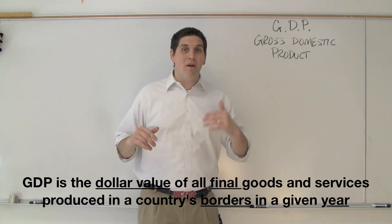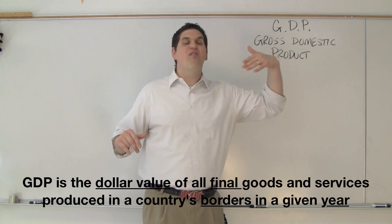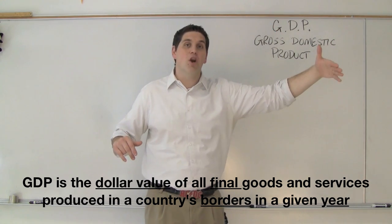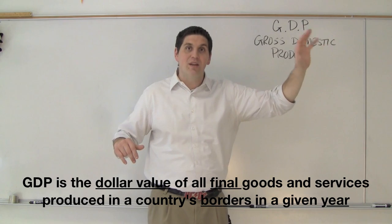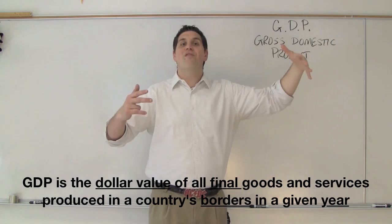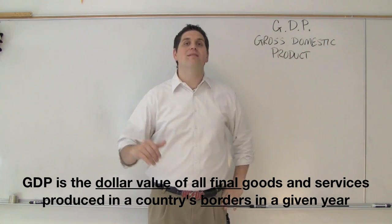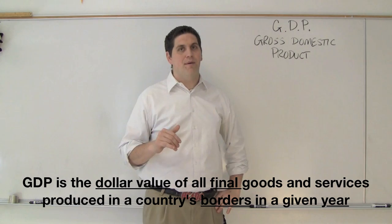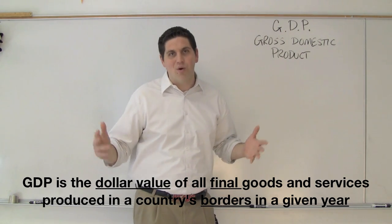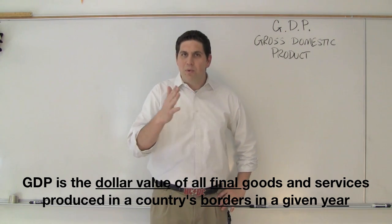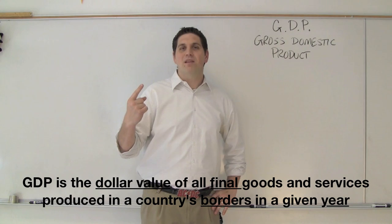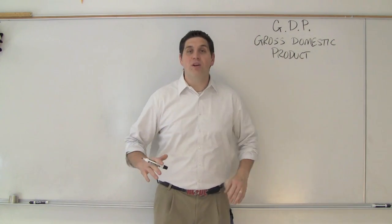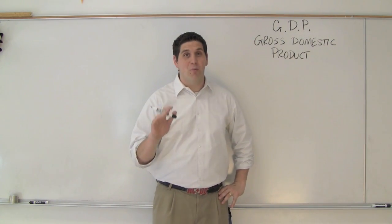In its own borders, it means an American company in another country. Let's say Ford produces something in Germany, cars in Germany. That counts towards the German GDP. And if Mercedes are built here in the United States, that counts towards the United States GDP. In a given year, self-explanatory, it's in one year's time. Even though GDP is looked at every three months, it's basically measuring in one year. GDP is important because you're going to be using it for the rest of the semester, so pay attention.